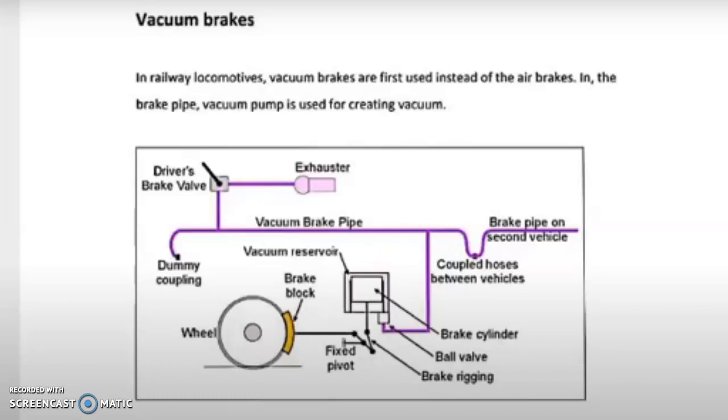Basically the vacuum brakes are used in railway locomotives. In railway locomotives, the vacuum brakes are extensively used for their good efficiency.